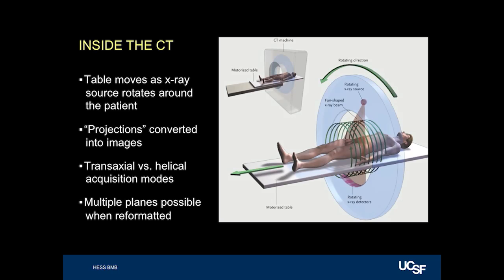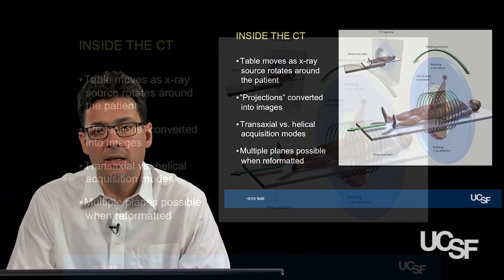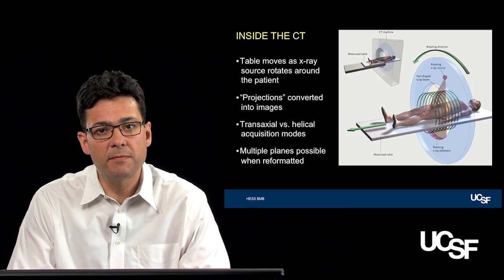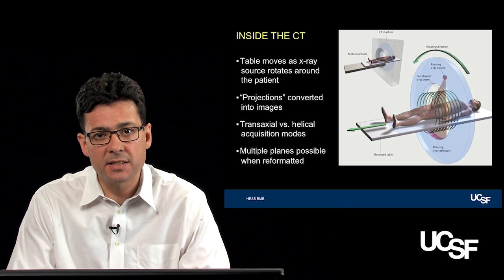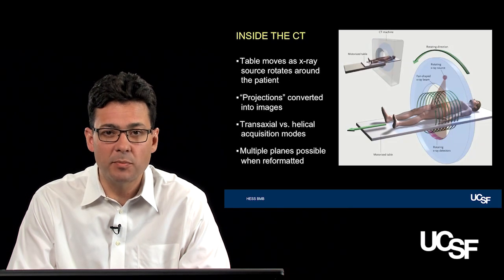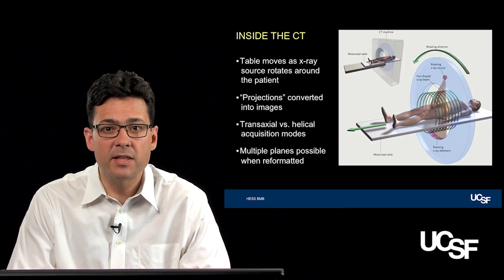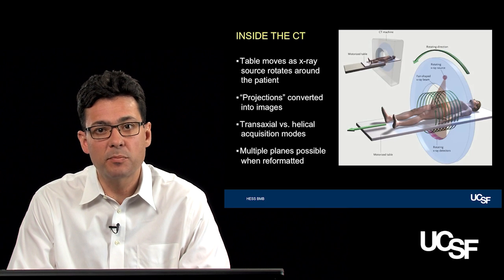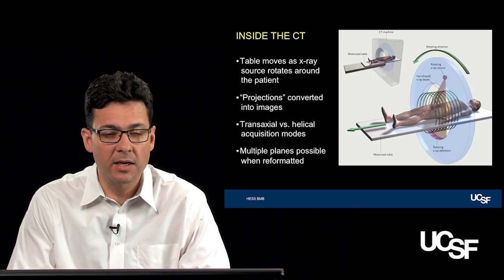With helical acquisition, the table is continuously moving. The gantry — the source and detector — are constantly rotating, and the three-dimensional data set is reconstructed into a three-dimensional volume. The advantage of helical acquisition is that multiple planes can be generated from this volume. So although CT scanning is essentially a salami slicer of the brain acquired in cross section, the images can be reformatted into different planes depending on the anatomic area of interest.